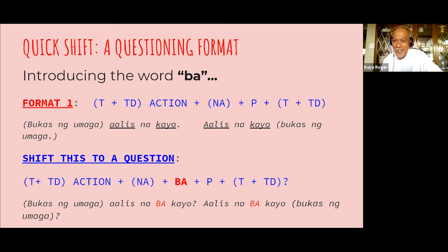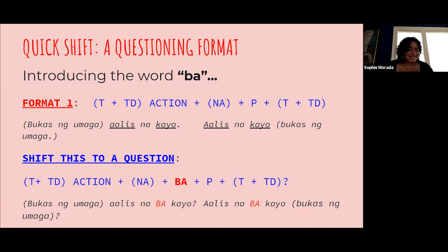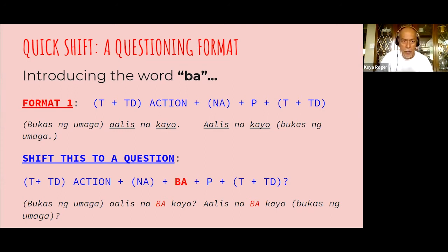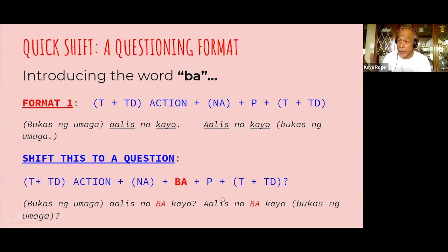The exception is ka — ka always comes right after the action verb, so the sequence becomes: verb, ka, na, ba. For example: aalis na ba kayo, bukas nang umaga. The time and time of day can be placed in front or after. And of course in format two: kayo ay aalis na ba.